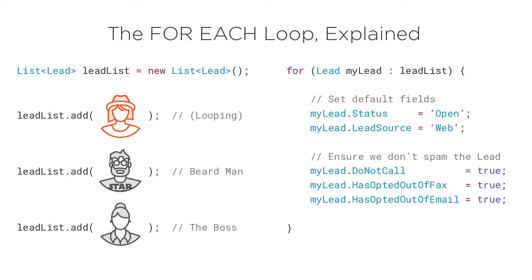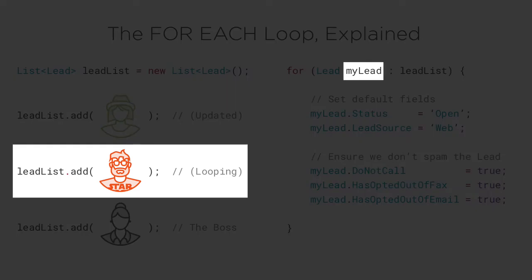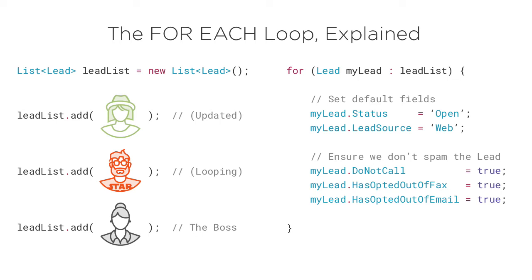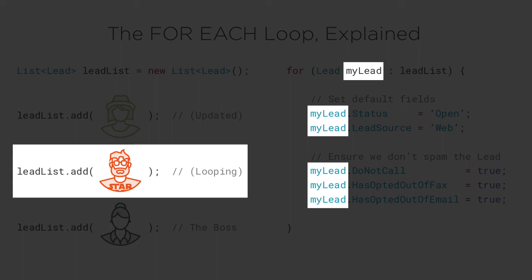Now that hat girl's fields have been changed and we can be assured she won't be spammed, our for each loop moves on to the next record, beard man. The my lead variable now points to beard man instead of hat girl. Don't worry, hat girl's fields have already been updated. So, we don't need to worry about our changes to her getting lost at this point. The code inside our for each loop executes and now beard man's fields have also been updated.